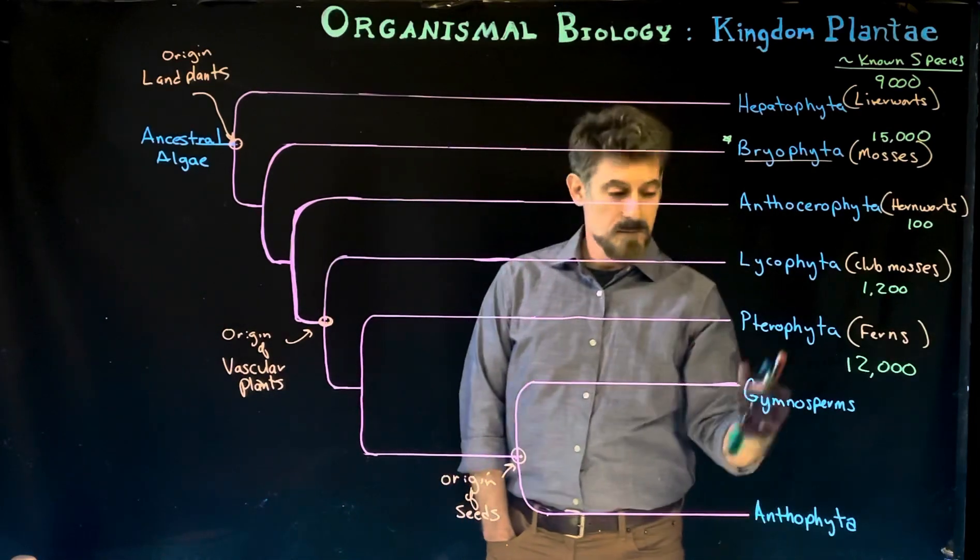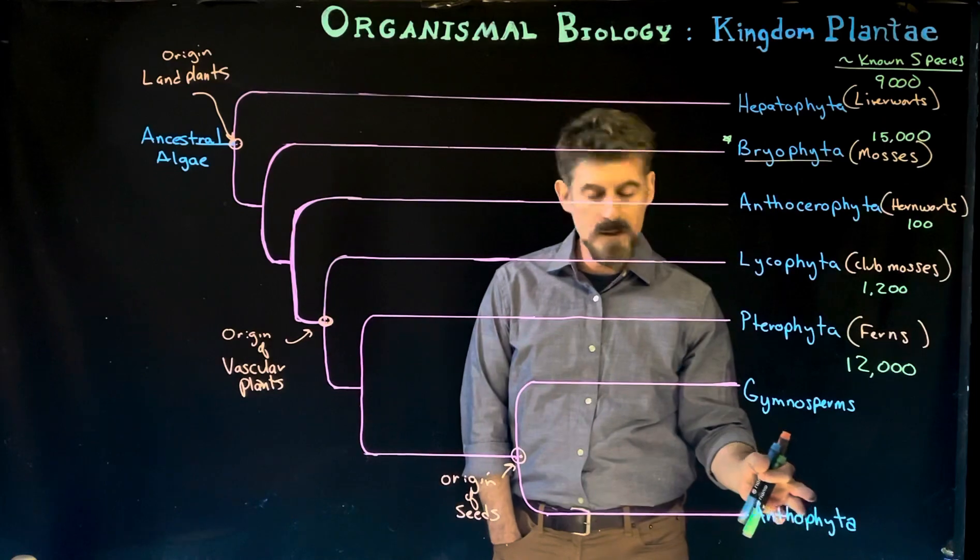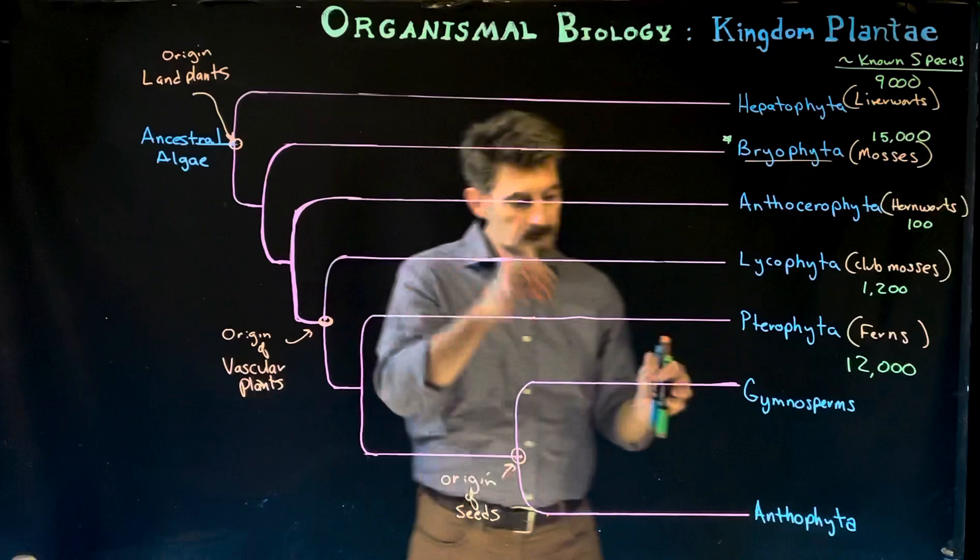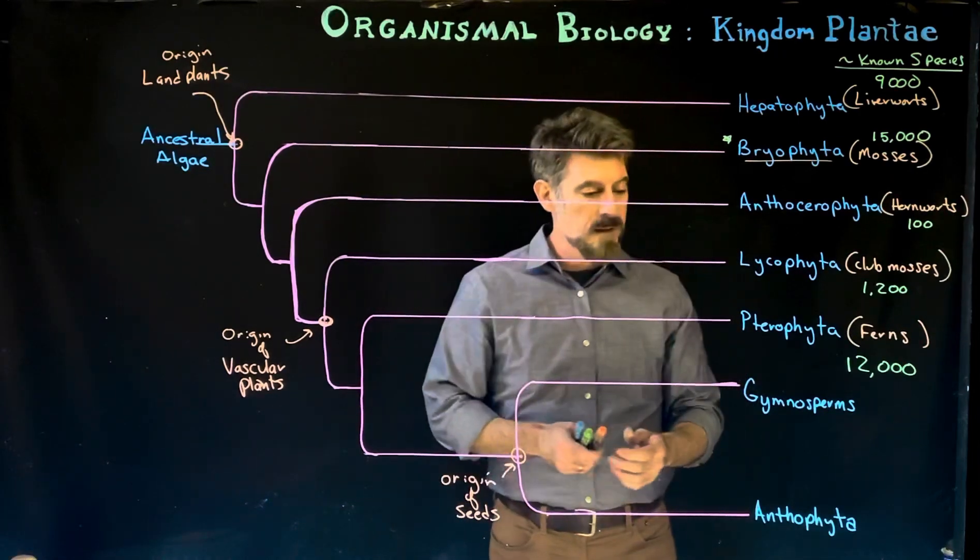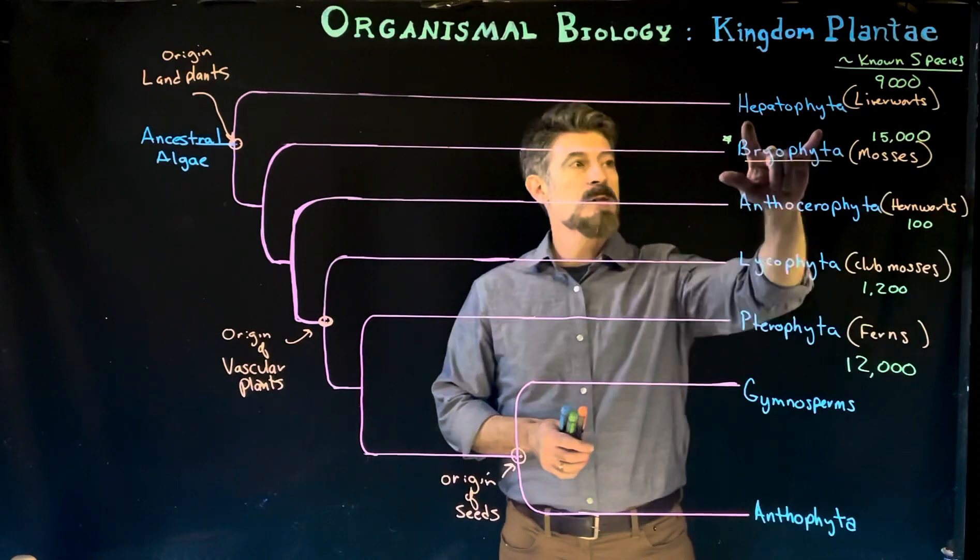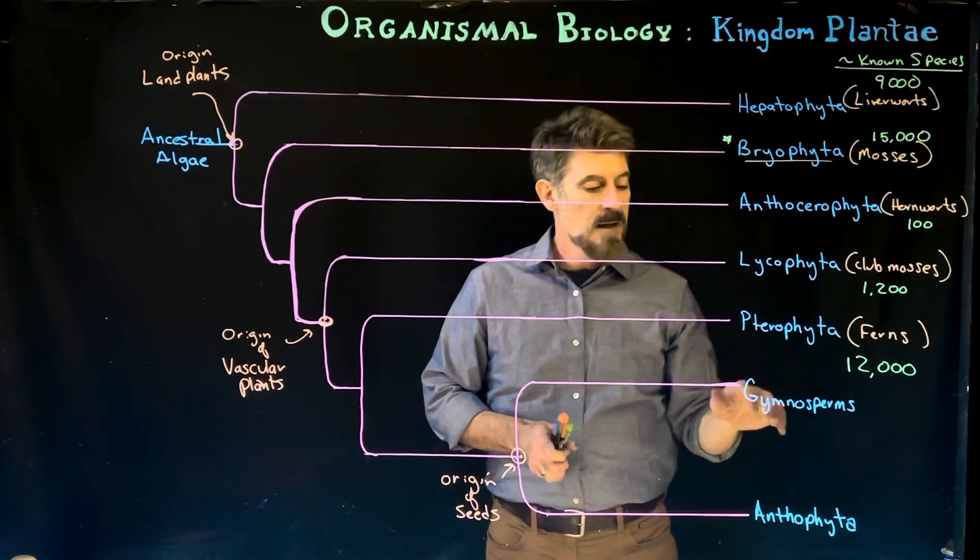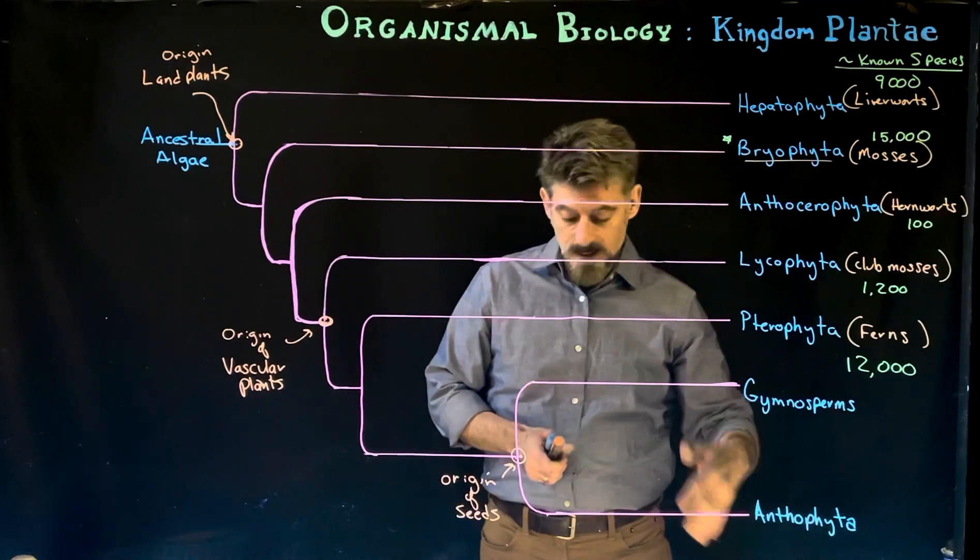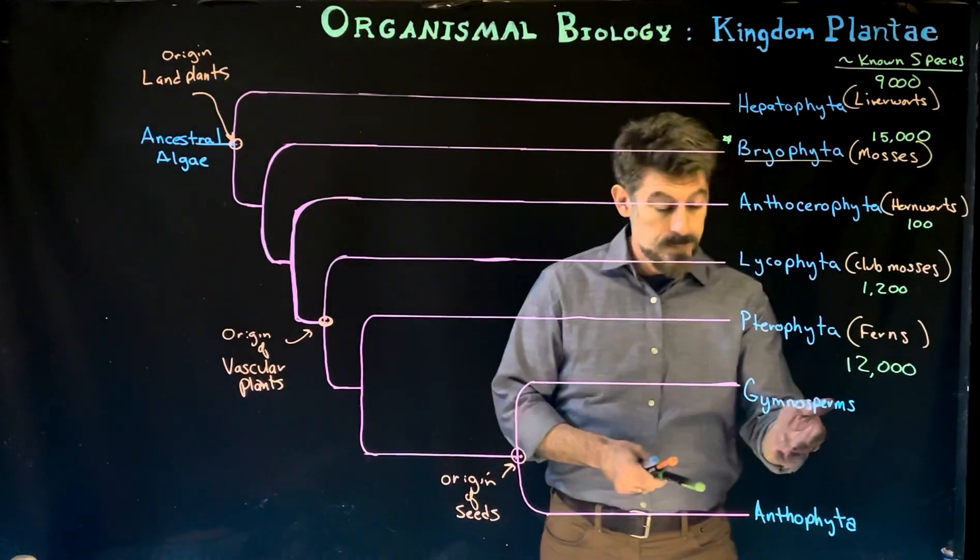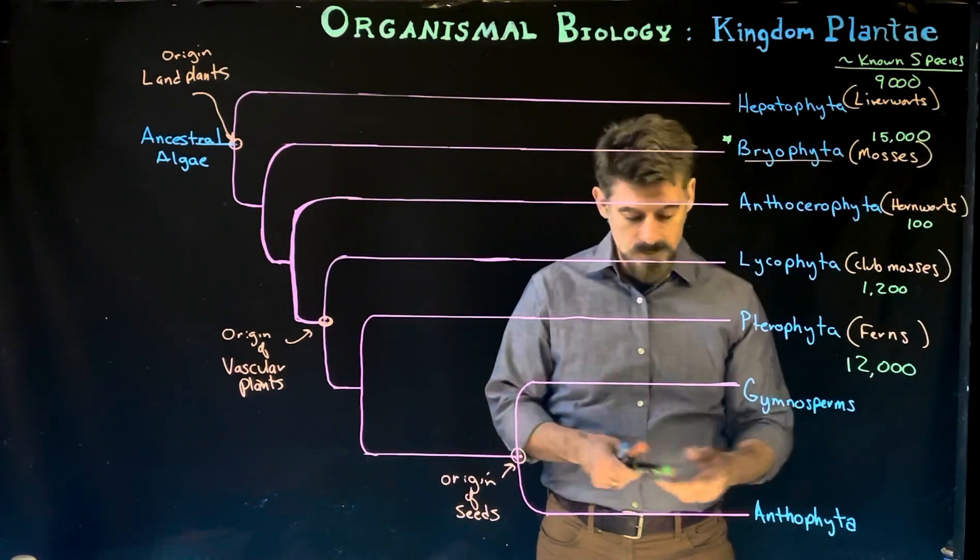This is what we're going to find as different in the life cycles of these groups up here: the production of spores. Whereas these down here, gymnosperms and angiosperms, which we'll talk about in a second, they're the groups that are going to produce seeds. I left a little bigger gap here and I wrote them a little bit different. So I've been writing the names of the phyla: the Hepatophyta, the Bryophyta, Lycophyta, Pterophyta, and down here, the Anthophyta.